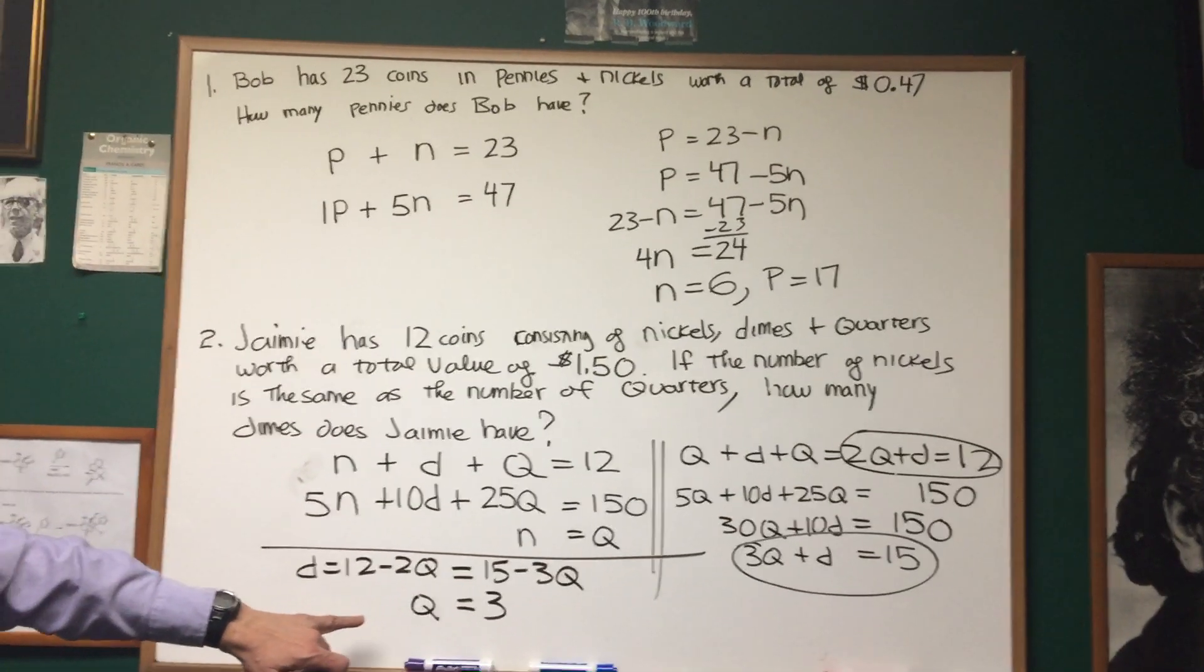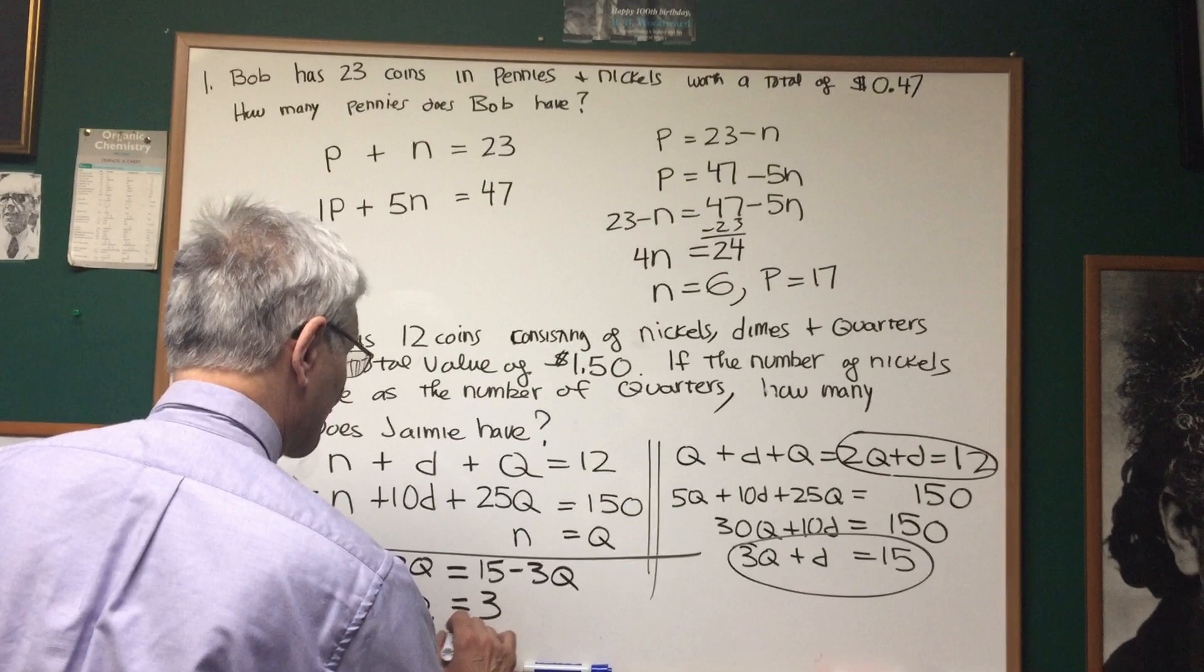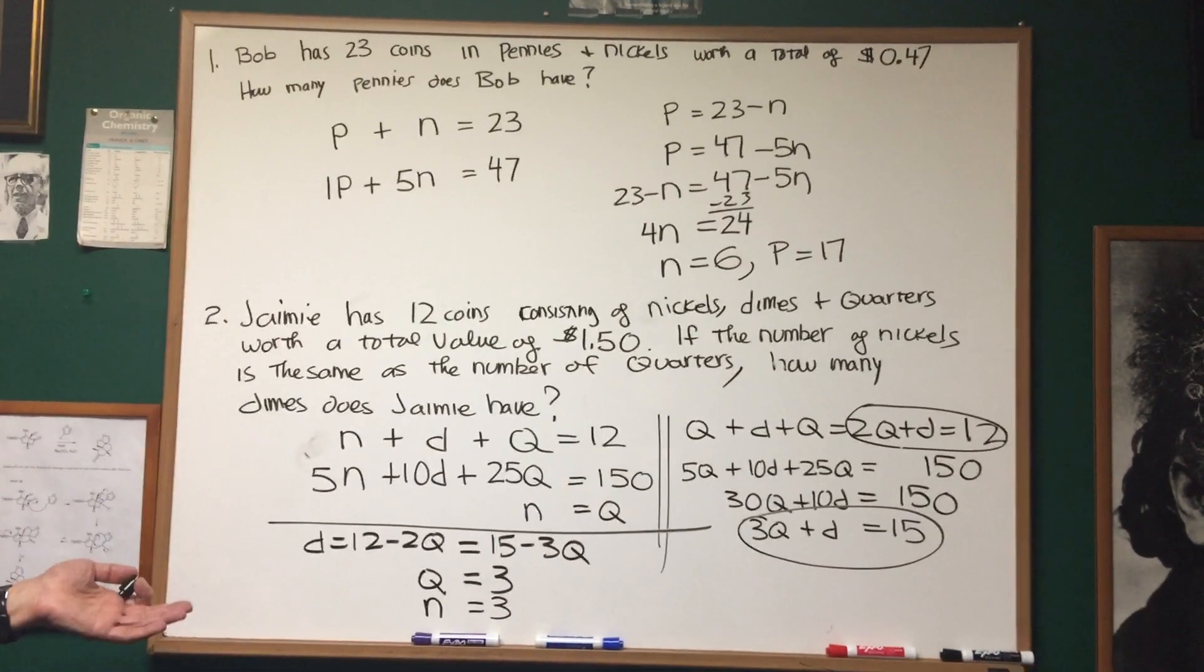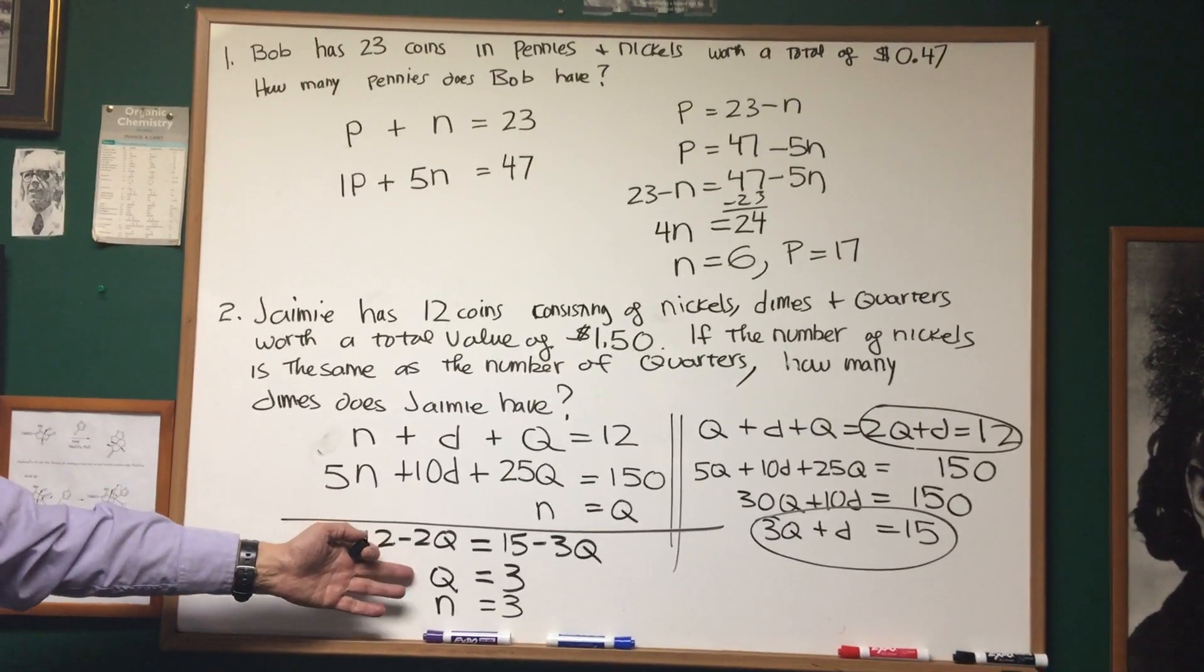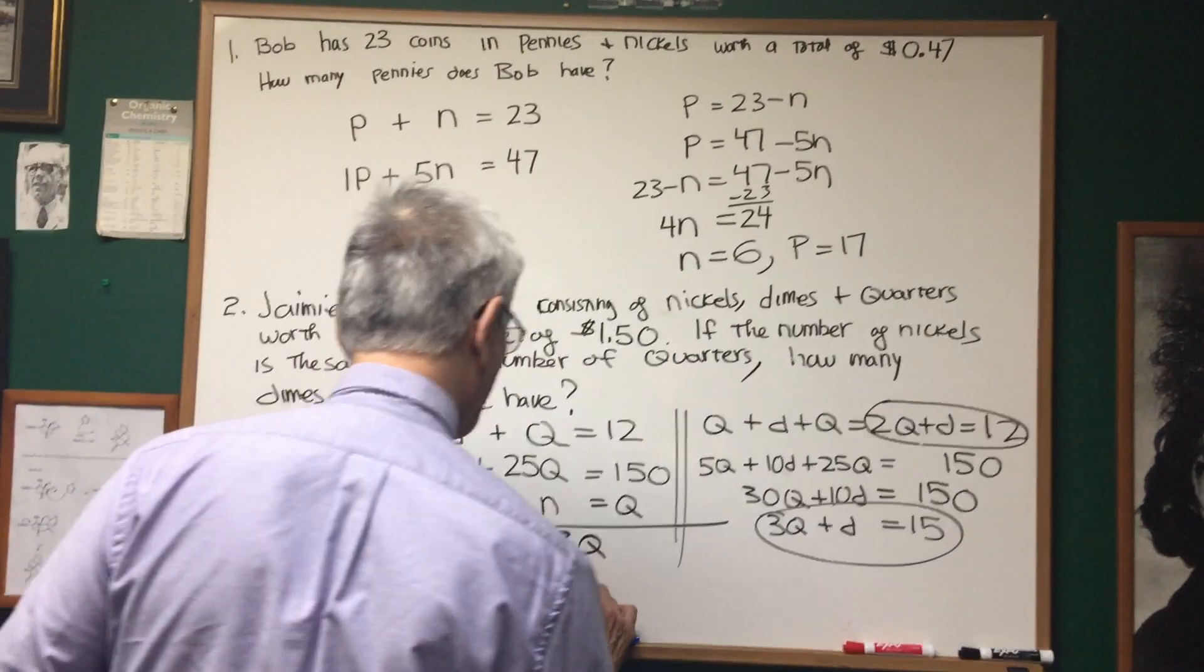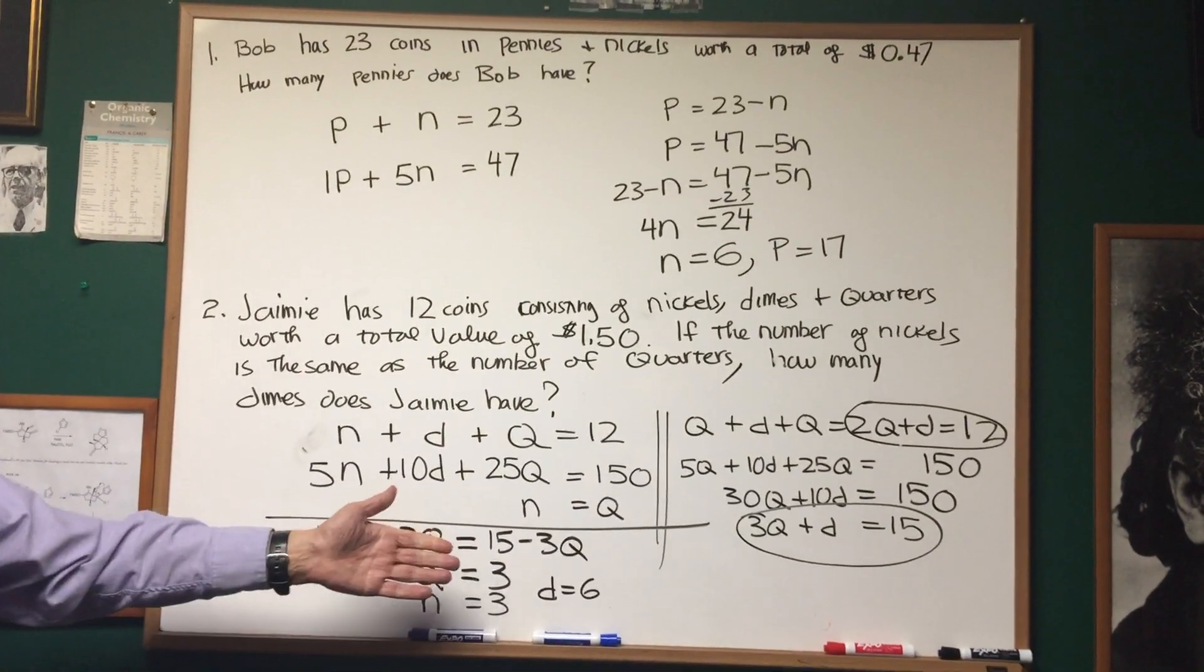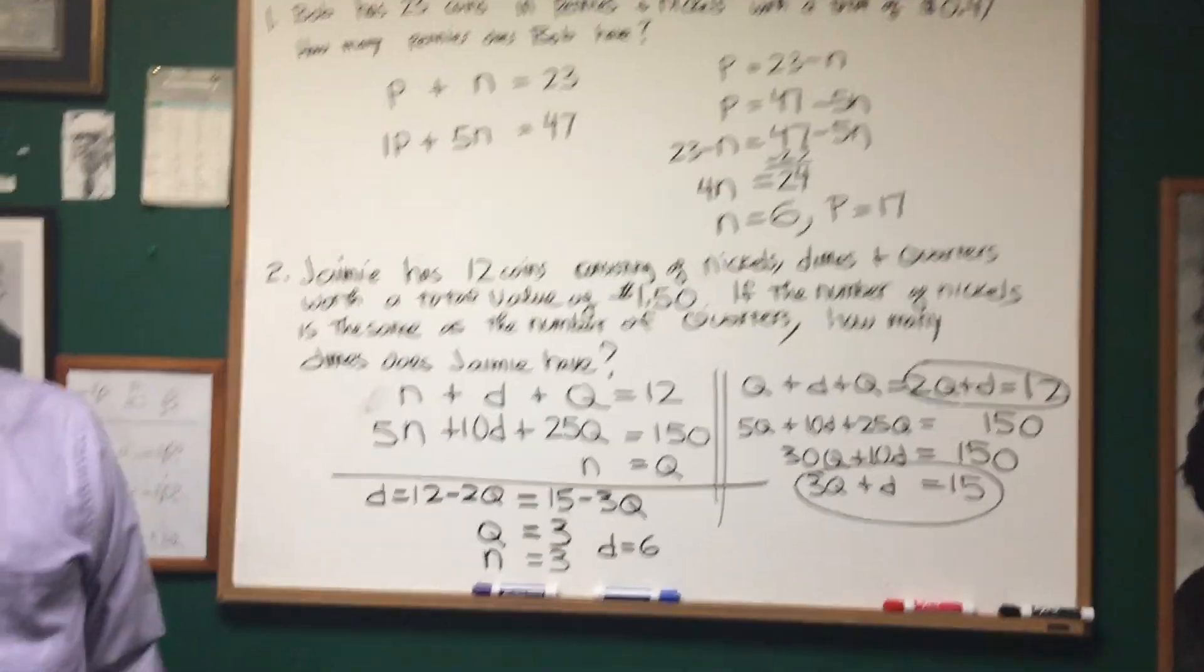Well, we know how many quarters he has. He has 3 quarters. The number of quarters equals the number of nickels. So, N is also equal to 3. He has a total of 12 coins. Well, 6 of the coins are accounted for by the number of quarters and nickels. Therefore, the number of dimes has to be 6. So, the total adds up to 12. So, how many dimes does Jamie have? 6. And there we are.